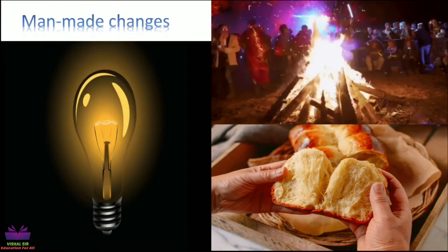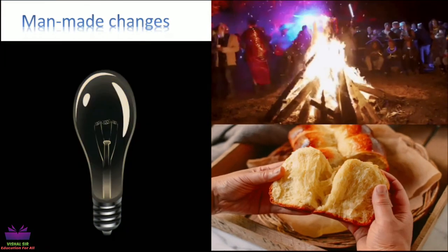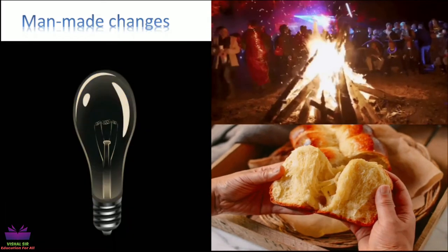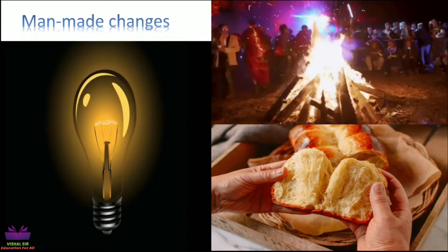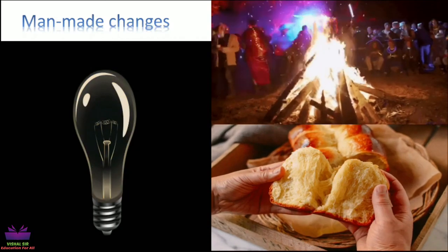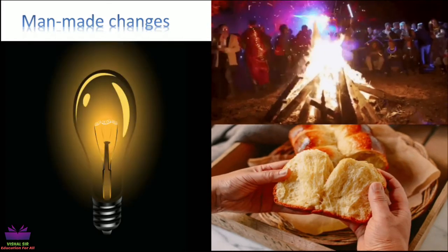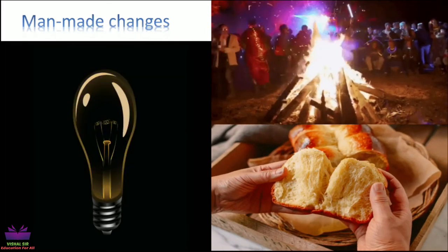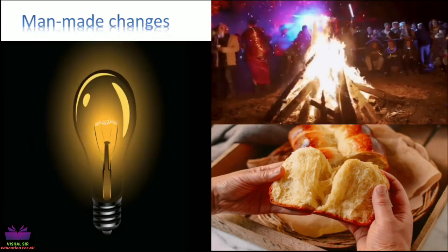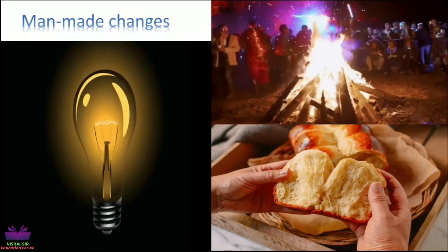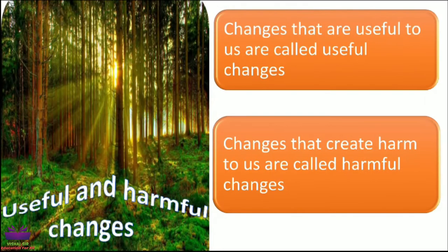Examples of man-made changes would be a campfire — you can see the wood is being burnt, and this is done by man; it doesn't happen naturally, so this is a man-made change. Making bread is also a man-made change. And the third example is that of a bulb — when you switch on the bulb, it's a man-made change.